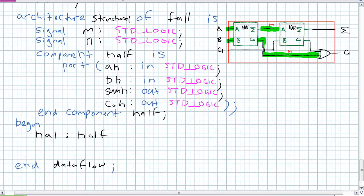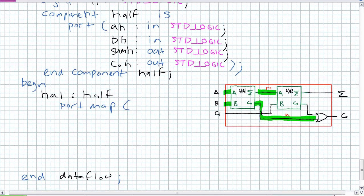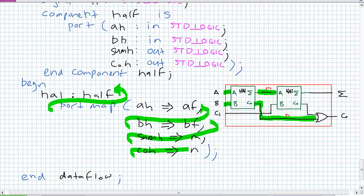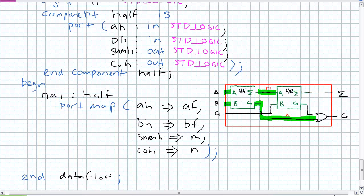Port map: AH maps to AF, BH maps to BF, SUM_H maps to internal signal M, COH maps to internal signal N. Put a comma between these and close up the port map statement. This could all go on one line, but I like writing it this way because I can see what my inputs and outputs are — it makes it readable. How am I going to define the other half adder? Give it a name, same component type, same port declarations in the green box, but different port mappings.